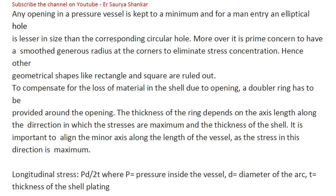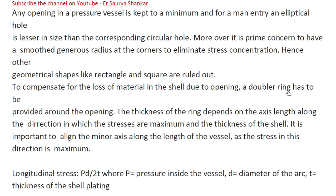When we cut a manhole door from a solid plate, there is a loss of material and a loss of strength due to that cut. So what we do is provide a compensation ring — also called a doubler ring — to compensate for the loss of material in the shell due to the opening. This ring is provided around the opening.